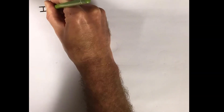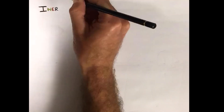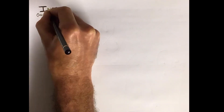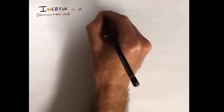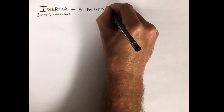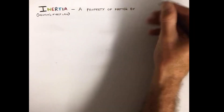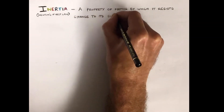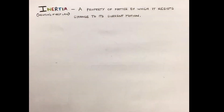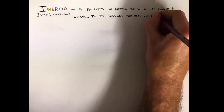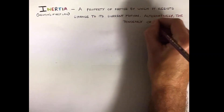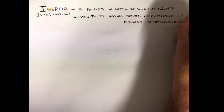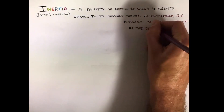So in our last episode, we took a look at momentum with the ball bounce experiment. Today, I thought we would look at inertia because a lot of people get these two things confused. Inertia is a property of matter by which it — the matter that is — resists change to its current motion. In this case, we're talking about the egg resisting change to motion.